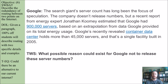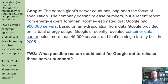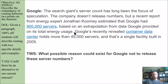Now we have Google. The search giant's server count has long been the focus of speculation. The company doesn't release numbers, but a recent report from energy expert Jonathan Comey estimated that Google had 900,000 servers, based on an extrapolation from data Google provides on its total energy usage — so this is just a best guess. Google's recently revealed container data center holds more than 45,000 servers, and that's a single facility built in 2005.